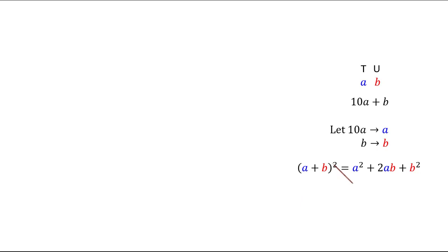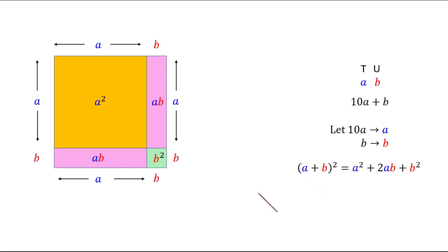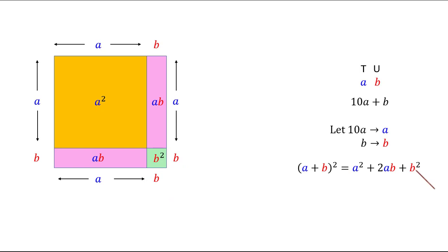We know that (A + B)² = A² + 2AB + B². The geometric interpretation is as follows: we have a perfect square whose sides are A + B. We draw an inner square with sides A, giving area A². Then we have two pink rectangles with sides A and B, each with area AB, giving 2AB in total. Finally, a tiny square with sides B gives area B². So (A + B)² = A² + 2AB + B².